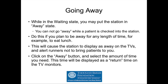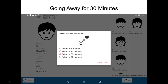The final functionality currently available in the station application is the ability to go away. You can put the station in away state when you're in the waiting state — it doesn't make sense to go away when a patient is in the chair, so finish with the current patient and check them out first. You'll use this if you plan to be away for any length of time, for example to go to lunch. This causes the station to display as away on the TV screens, telling runners not to bring a patient. Click the away button in the lower right-hand corner, select the amount of time you need, and a return time will be displayed on the TV monitors. The station will indicate it's returning in 30 minutes, and clicking the away button will put you in the away state.